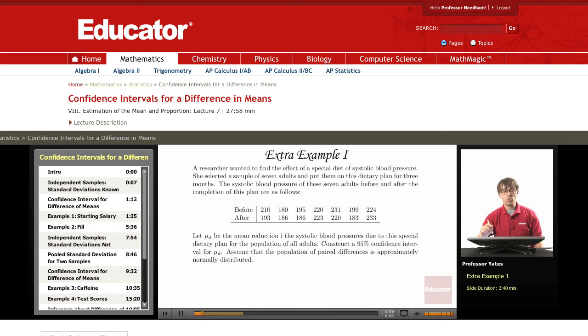A researcher wanted to find the effect of a special diet on systolic blood pressure. She selected a sample of seven adults and put them on this dietary plan for three months. The systolic blood pressure of these seven adults before and after the completion of this plan are as follows, and we have these before and after here.